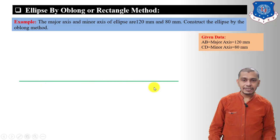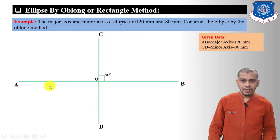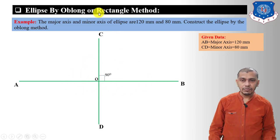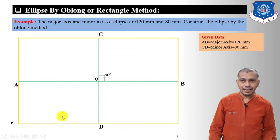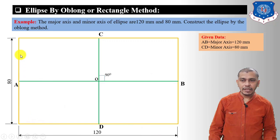First, draw the major axis AB having length equal to 120 mm, then draw the minor axis CD having length equal to 80 mm. Make sure that the major axis and minor axis should be perpendicular bisectors of each other. After drawing the major and minor axes, draw a rectangle containing points A, C, B, and D by drawing lines parallel to the minor axis from A and B, and lines parallel to the major axis from C and D. You will get a rectangle having side lengths 120 mm and 80 mm.